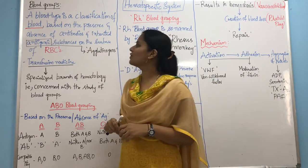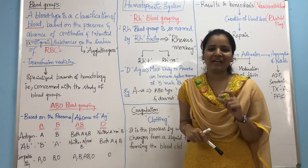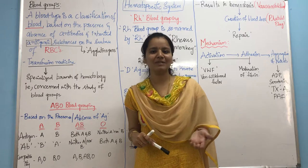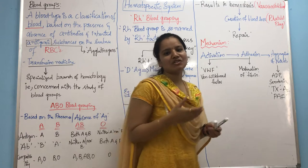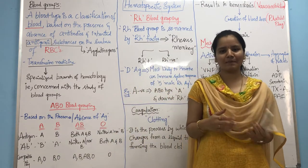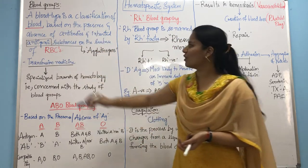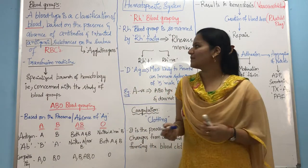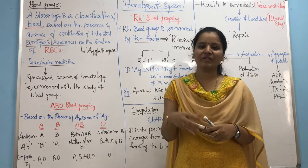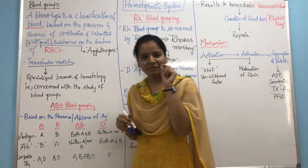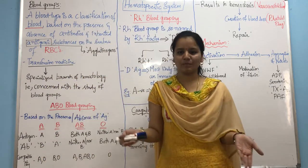A blood group or blood type is a classification of blood. Blood is the fluid present in both animals and human beings, which is essential to carry out the major nutrients and oxygen supplied to the cells. Blood type is a classification of blood based on the presence or absence of antibodies and inherited antigenic substances on the surface of red blood cells — that is, based on the presence of either antigens or antibodies on the erythrocytes.